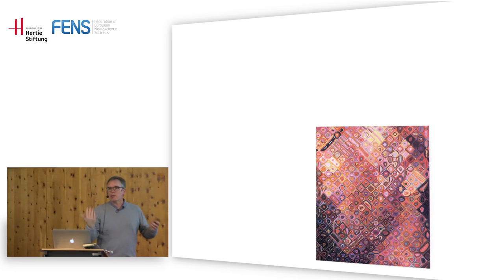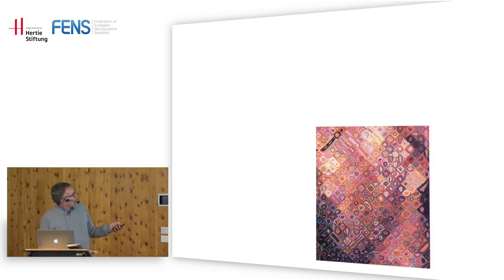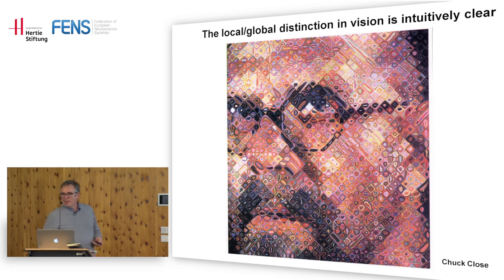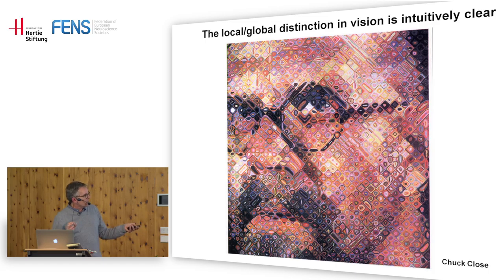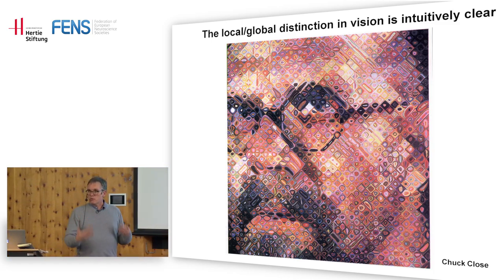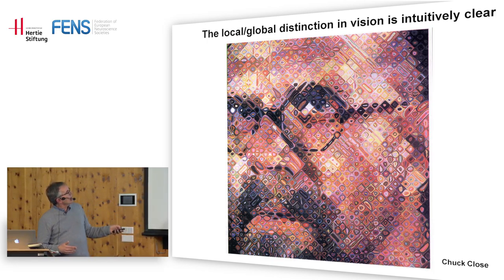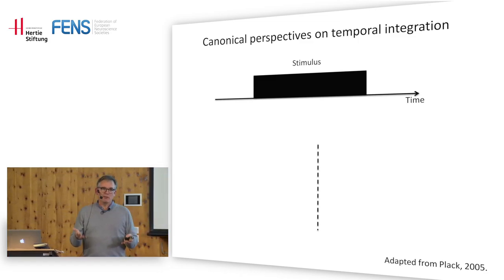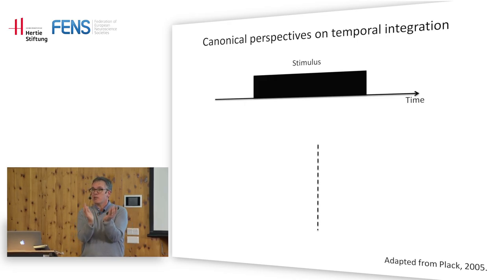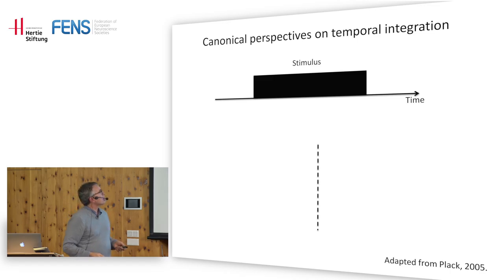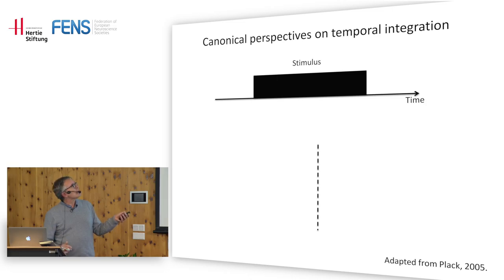The granularity in time has specific perceptual consequences - you need both the small stuff and the big stuff. This is like another similar problem - look at this picture made up of little squares with their own patterns and colors. When you look at the whole picture you see Chuck Close in a self-portrait. In the visual domain you have to analyze local detail but also look at global configural information to get a different kind of thing. In the time domain it's similar - you have to somehow integrate information and decide how much to use for a simple representation.